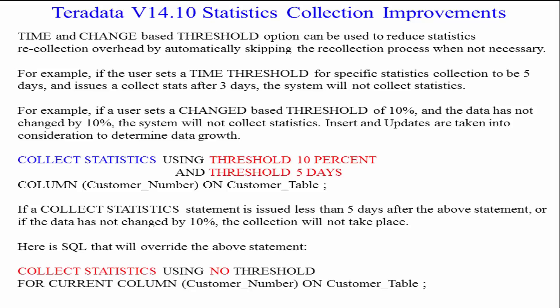For example, if the user sets a time threshold for specific statistics collection to be five days and issues a collect stats after three days, the system will not collect statistics. Another example: if a user sets a change based threshold of 10% and the data has not changed by 10%, the system will once again not collect statistics.